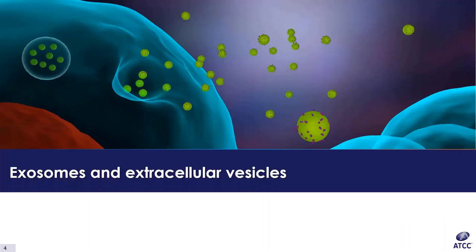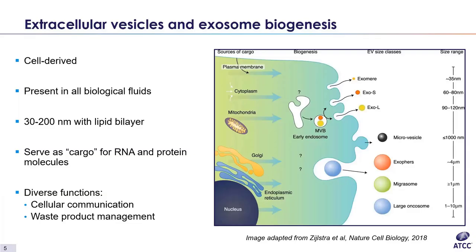This brings us to the first part of the talk: exosomes and extracellular vesicles. Extracellular vesicles are lipid bilayers that are secreted from cells. Their size ranges from 10 nanometers up to 2 micrometers. One subclass of extracellular vesicles are exosomes, which are between 30 and 150 nanometers in size. Exosomes are produced by the endocytic pathway in the endosomal compartment of most eukaryotic cells. As seen in the figure on the right, exosomes are further divided into large exosomes (90–120 nm), small exosomes (60–80 nm), and exomeres, which are below 35 nanometers.